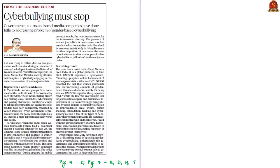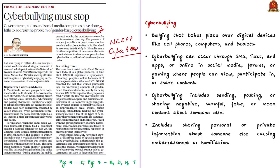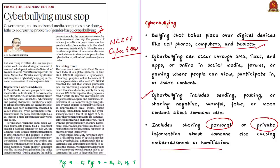Let us take up this op-ed column on gender-based cyber bullying. The news article states that many women journalists undergo victimization with reference to cyber bullying. Cyber bullying is bullying that takes place over digital devices like cell phones, computers, and tablets. It includes sending, posting, or sharing negative, harmful, false, or mean content about someone else. It can also include sharing personal or private information about someone else which causes embarrassment or humiliation. The most common places where it occurs are social media, messaging apps, and online chatting.